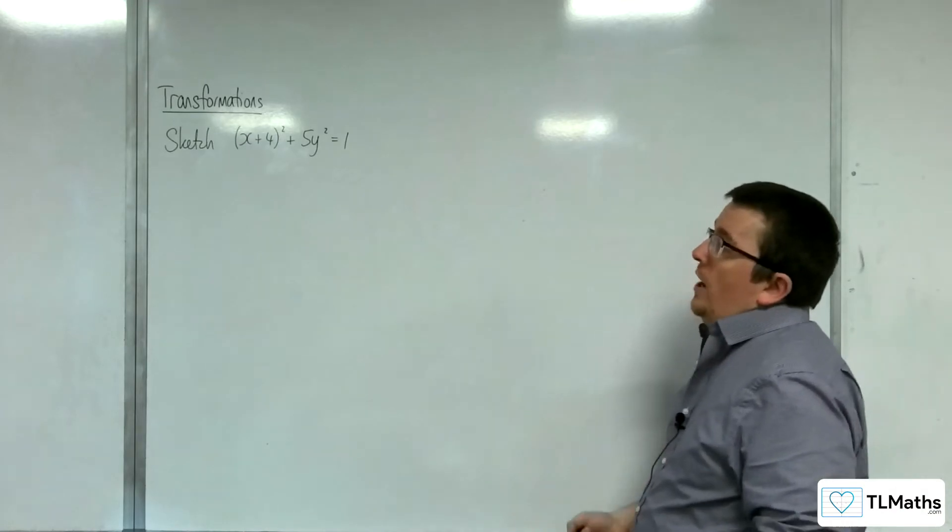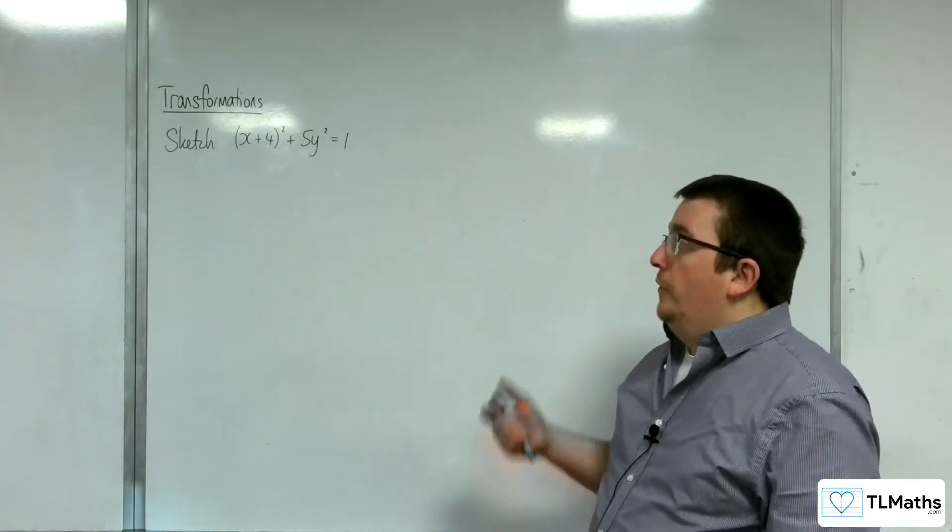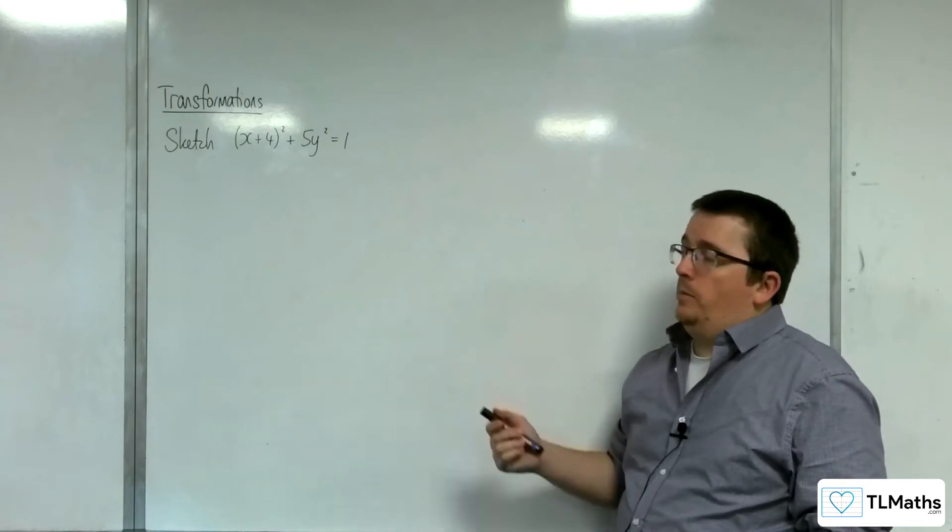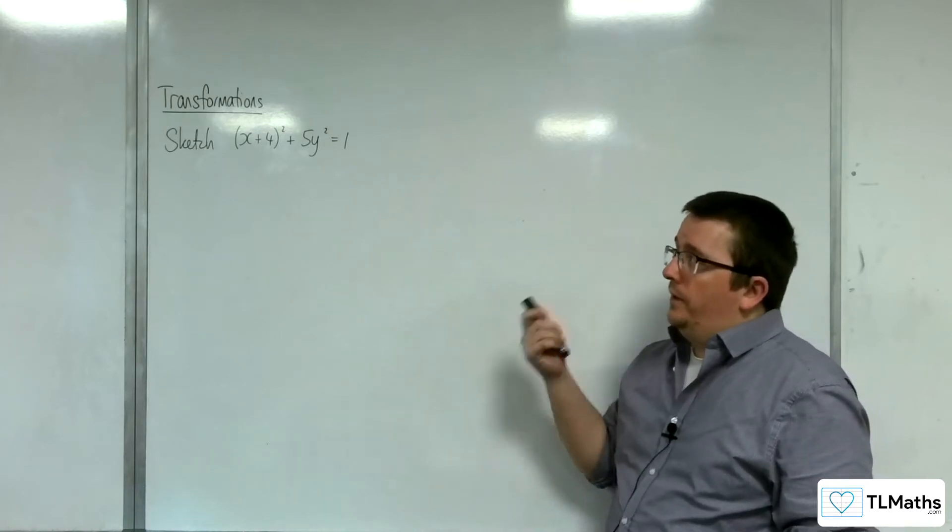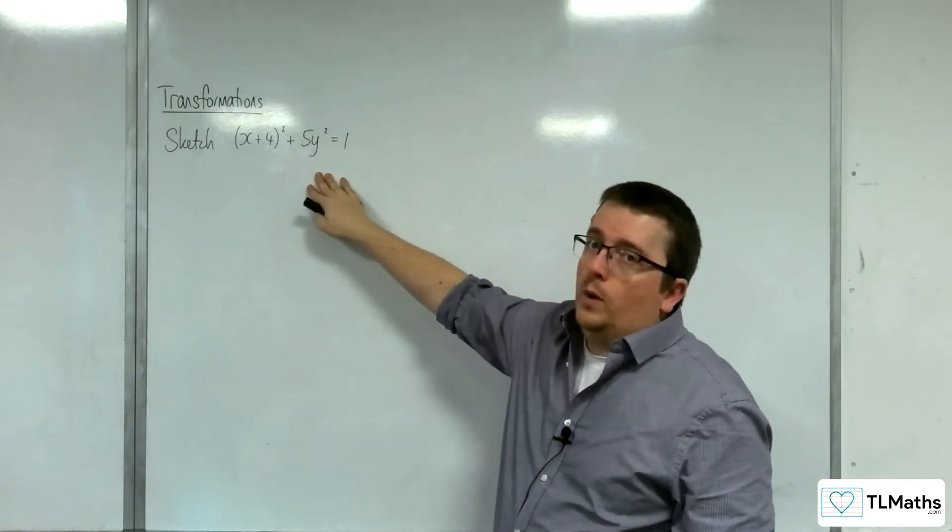So, in this video, we're going to sketch x plus 4 squared plus 5y squared equals 1. The first thing to do is to identify what type of graph this is, and this is an ellipse, because you've got the x squared plus a y squared.